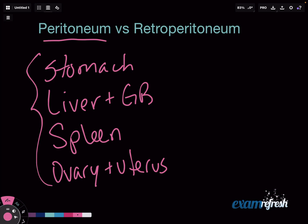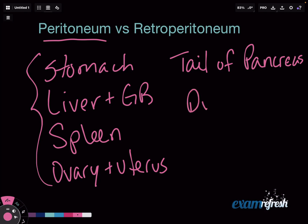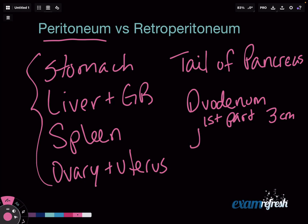You also have a lot of bowel. One of the main ones you need to know is that the tail of the pancreas — and only the tail — is peritoneal. We have the first part of our duodenum, just the first part, which is actually the first three centimeters. You do not need to know that number; I'm just telling you so you can visualize it. We also have our jejunum, our ileum, and our sigmoid colon.